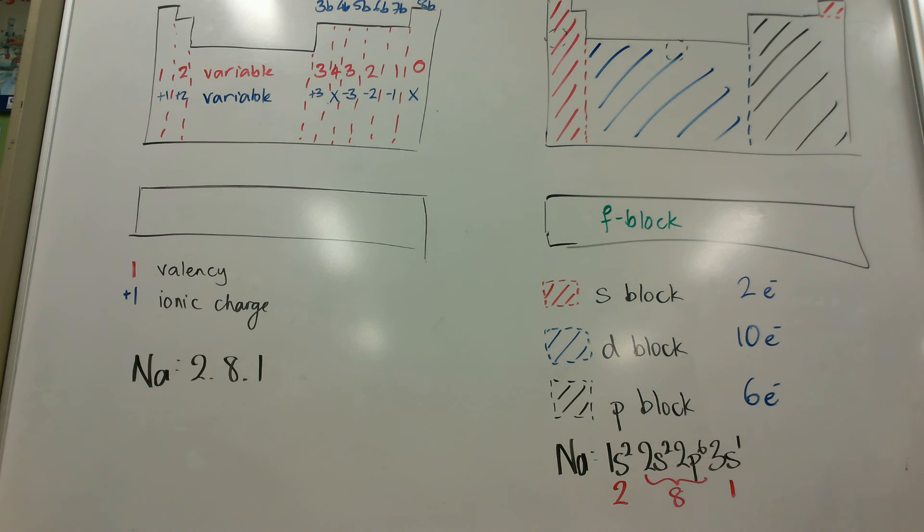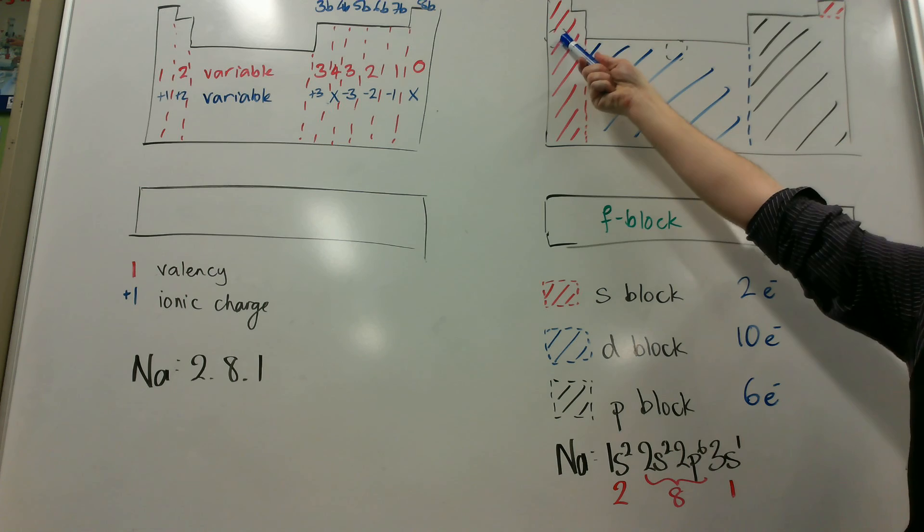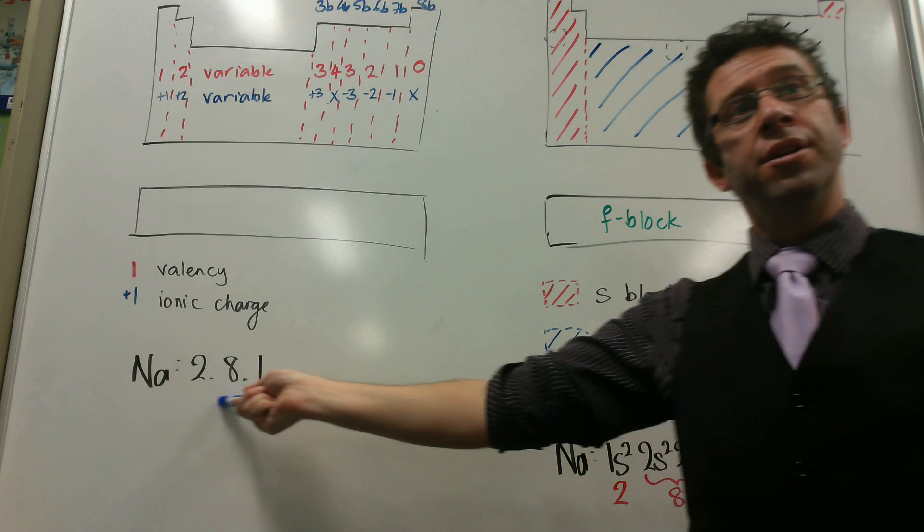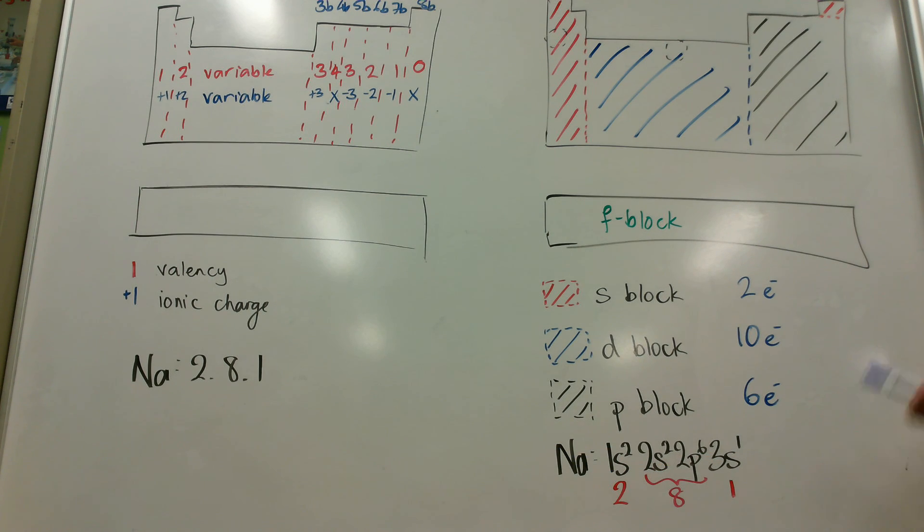So it's still two eight. It's just we're being more specific about how they're arranged. And this will be really important when we look at physical properties like ionization energies and things like that later in the unit. And then our last electron is going here, where I predicted. Third row, so it's got to have a three. S block, so it's got to have an S. And I know there's only one electron left, so I put a one. And that's how we write electron configurations this year. So we've transitioned from this simple method to this more meaningful method.